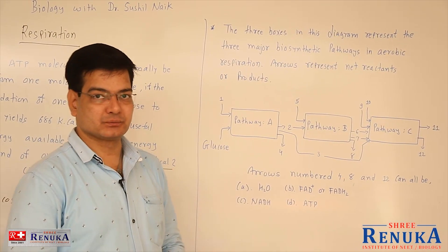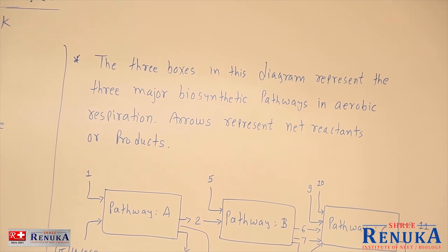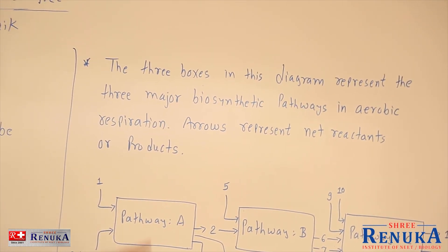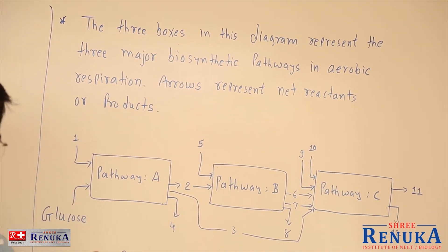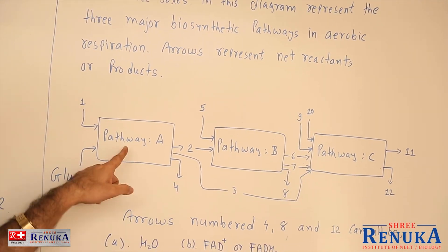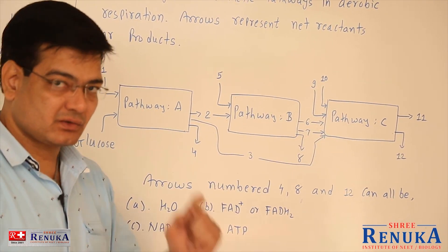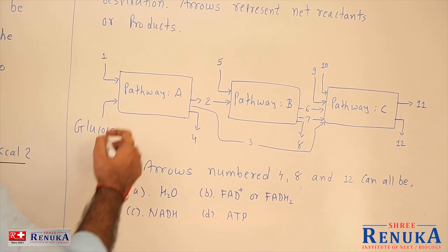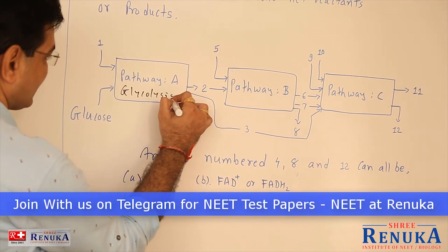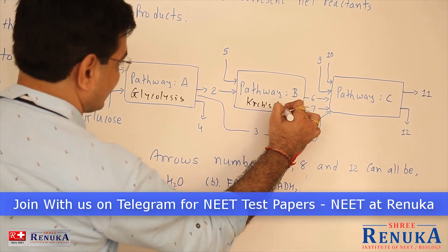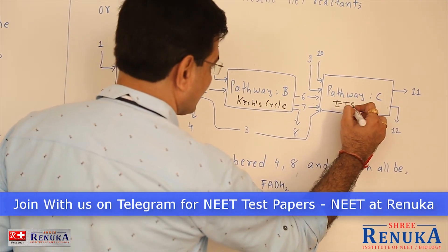The next MCQ: three boxes in the diagram represent the major stages of the biosynthetic pathway in aerobic respiration. Arrows represent net reactants or products. These are the three pathways of aerobic respiration — obviously the first one is glycolysis, the second one is the Krebs cycle, and the third one must be the electron transport system.